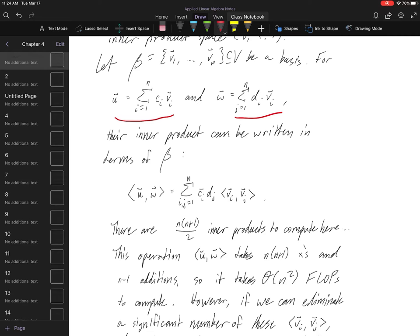We can readily compute their inner products if we know the inner products between the basis elements already. We can compute this using the bilinearity of the inner product. That'll wind up giving us the relationship that the inner product between u and w is a double sum—I'm indexing over i and j here, so be mindful of the indices.